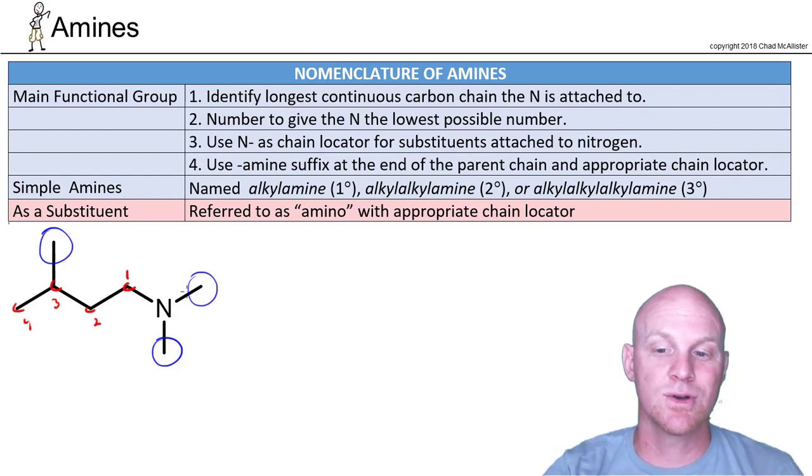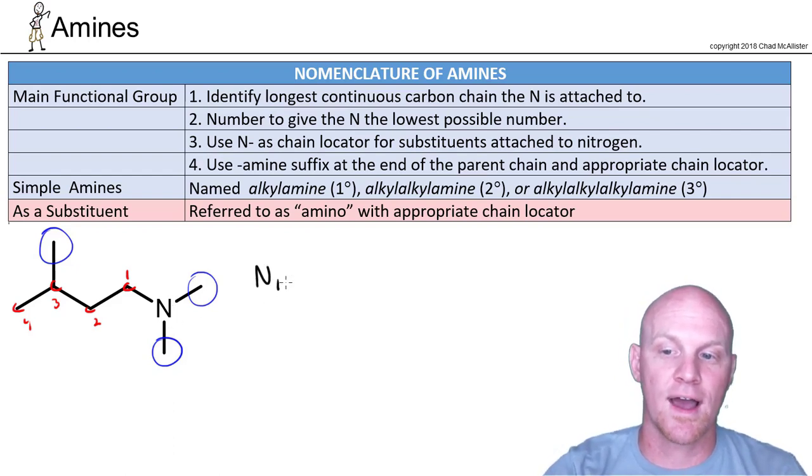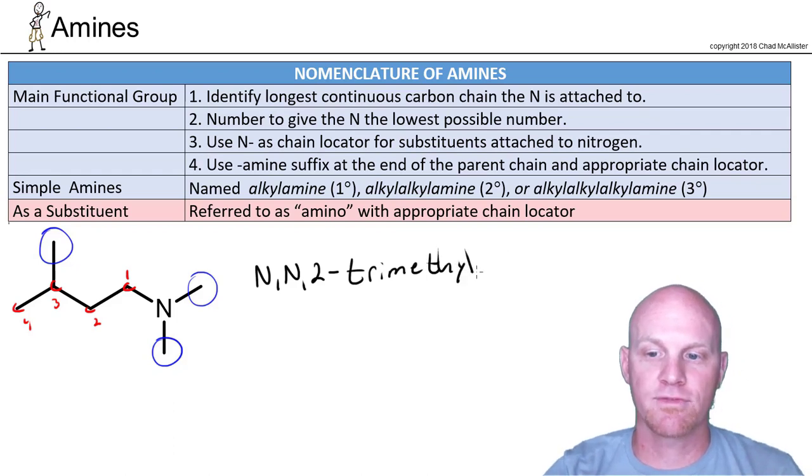But when I go to give their locations, two of them are attached to the nitrogen. And so I actually list them as being attached to the nitrogen. So we're going to say NN2 trimethyl. So we'll start off there. And in this case, a four-carbon chain is butane.